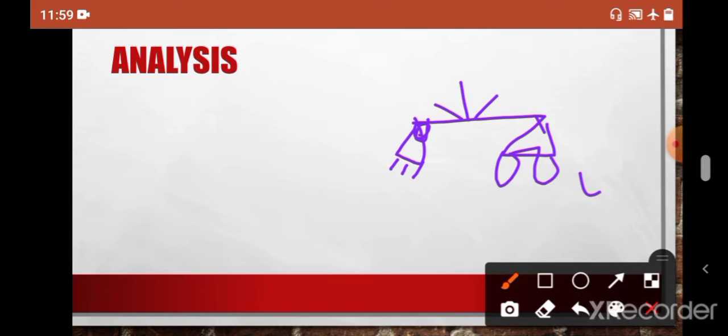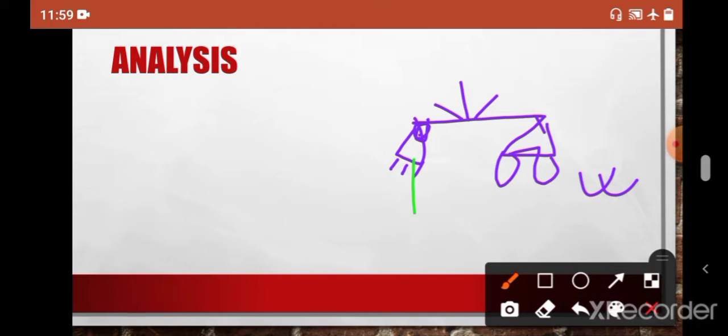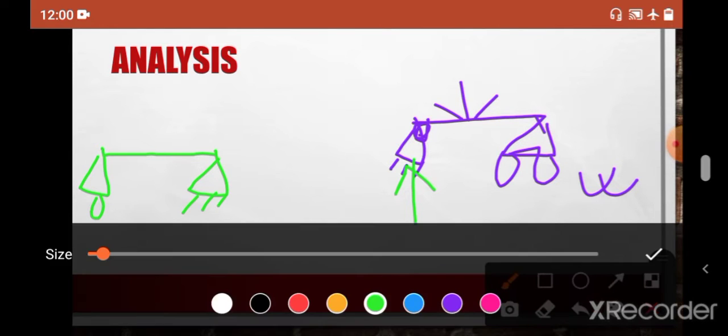By analyzing this simply supported beam, definitely you will be able to find out the reactions here. So just like in the left side, here also roller and this is hinge, internal hinge. Here is also some load like this one and you are able to find the reaction here.